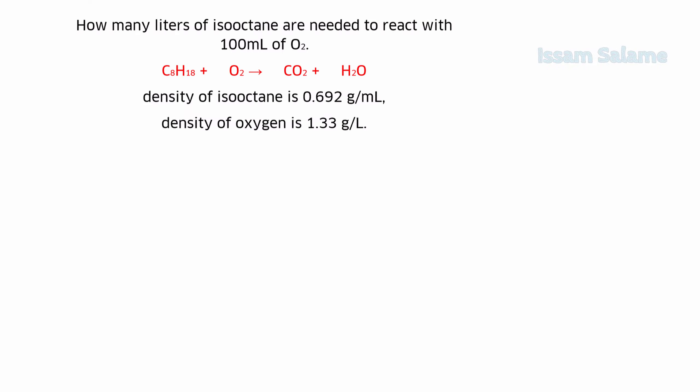Another exercise: how many liters of isooctane are needed to react with 100 milliliters of oxygen? Before solving, we must balance the chemical reaction. To balance, we multiply isooctane by 2, carbon dioxide by 16, water by 18, and oxygen by 25.